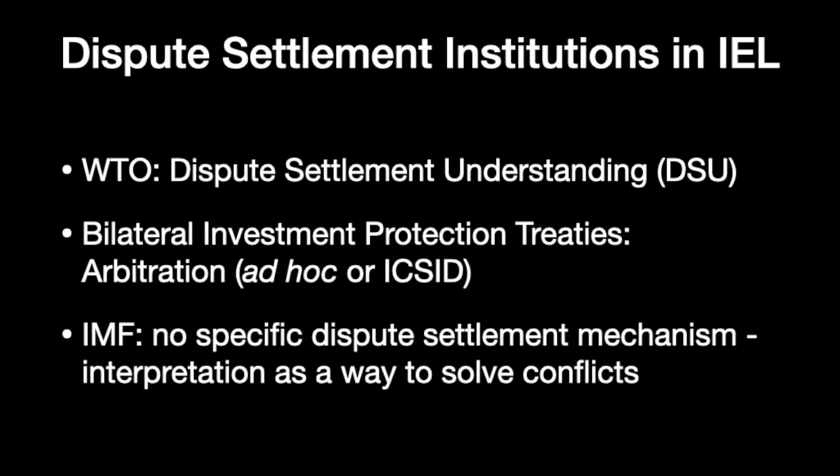Dispute settlement institutions in international economic law include: in trade, the WTO and the Dispute Settlement Understanding, a very meaningful part of WTO law that has come under attack in recent years; bilateral investment protection treaties providing for ad hoc arbitration or ICSID arbitration, by far the most expedient way to have arbitration between investors and states. Notably, the IMF has no specific dispute settlement mechanism — instead, what exists is interpretation as an institutional way to resolve conflicts, which we will look at in part two of the course.